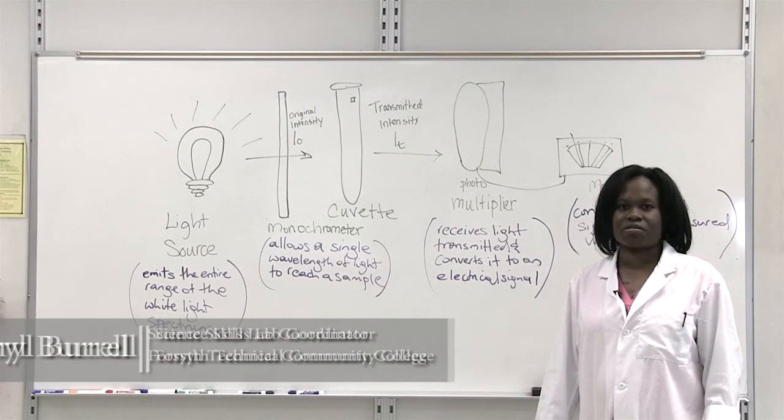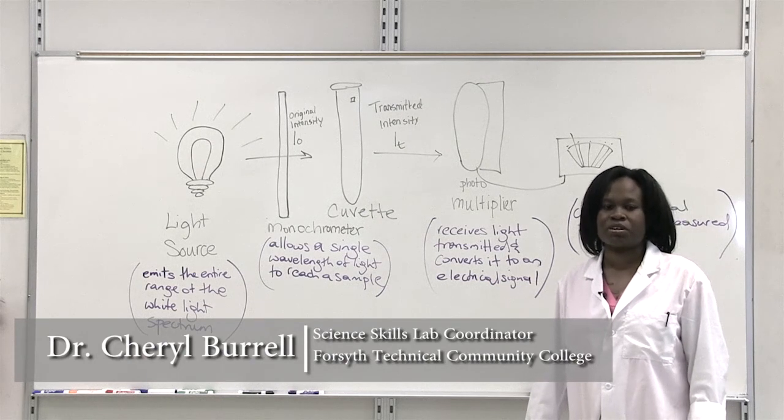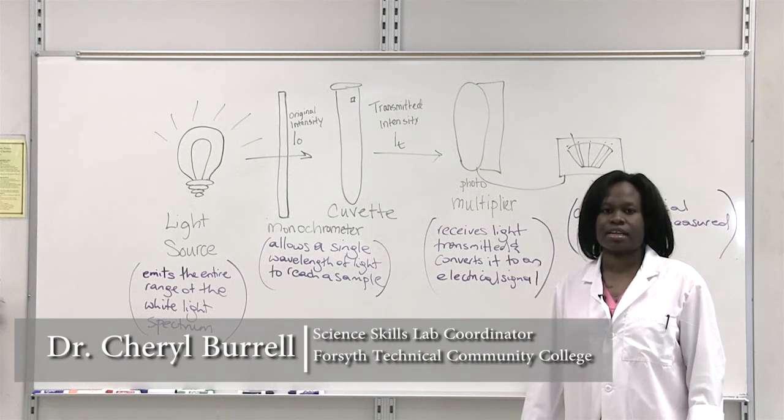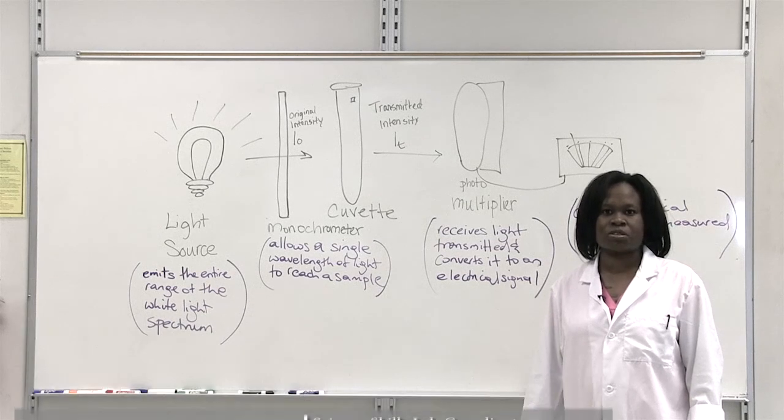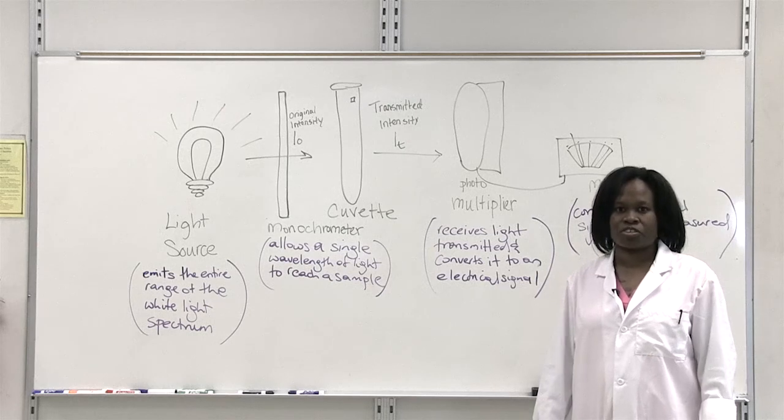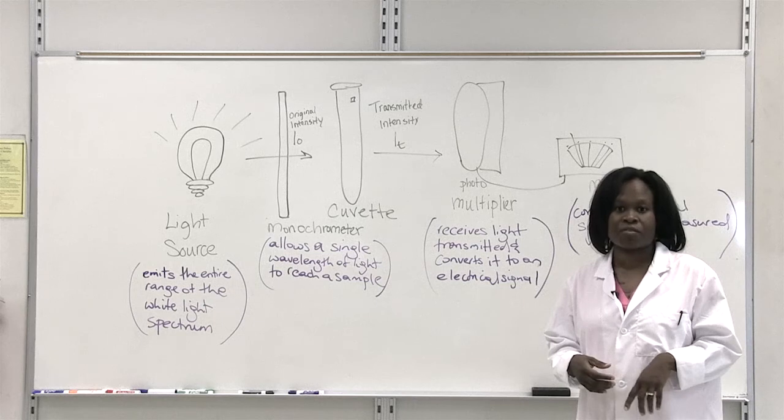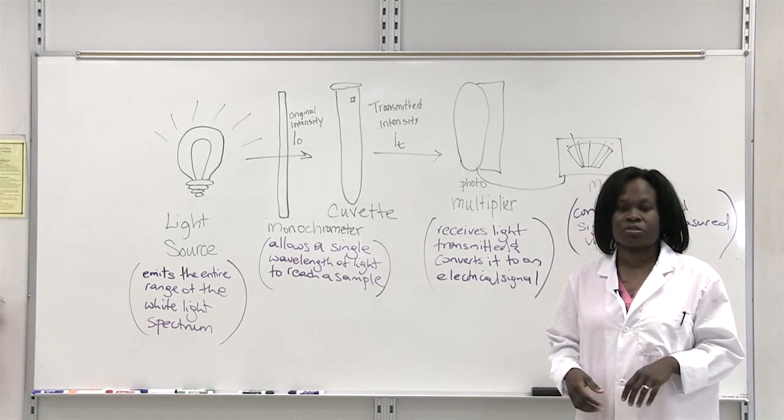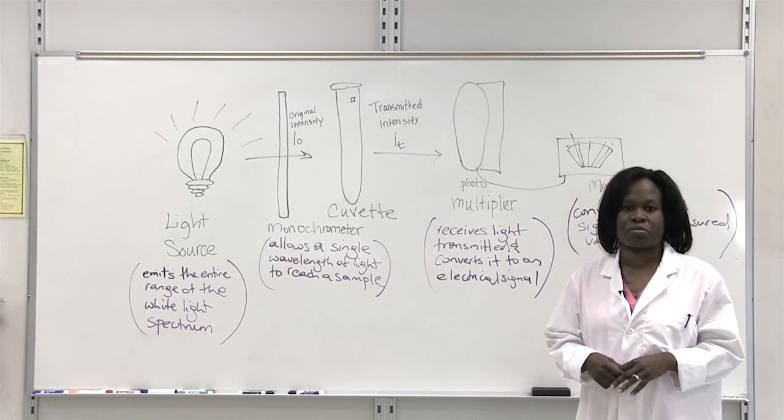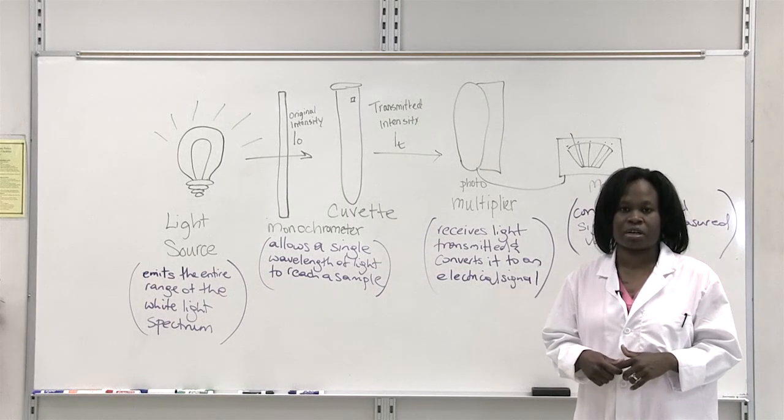So your next lab involves using the spectrophotometer, and the spectrophotometer is actually a machine that can measure light that is absorbed at different wavelengths. And if you can measure what is absorbed by a particular substance, like a food dye for example, you can use that absorbance value to determine the concentration of the food dye that you may have in your particular product.